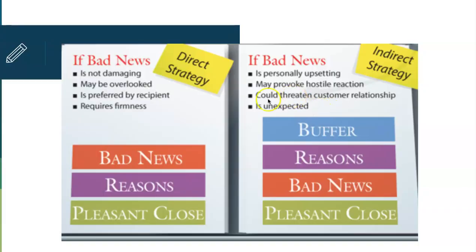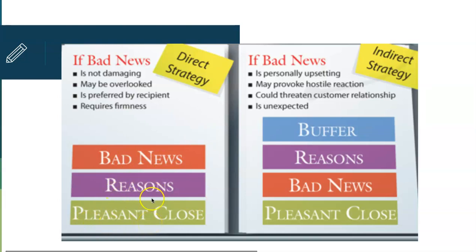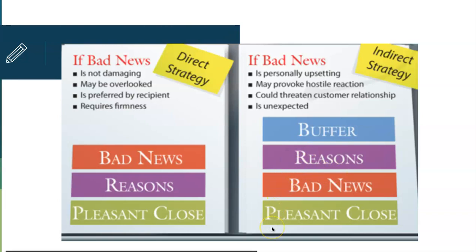There's a visual in the textbook showing how you'd employ direct versus indirect strategy. If you're using direct, you'd lay out your message: bad news announced right away, reasons for the bad news, and a pleasant close. If you're using indirect to soften the blow, you'd start with some sort of buffer, then the reasons for the bad news, then the actual bad news itself, and then a pleasant close.